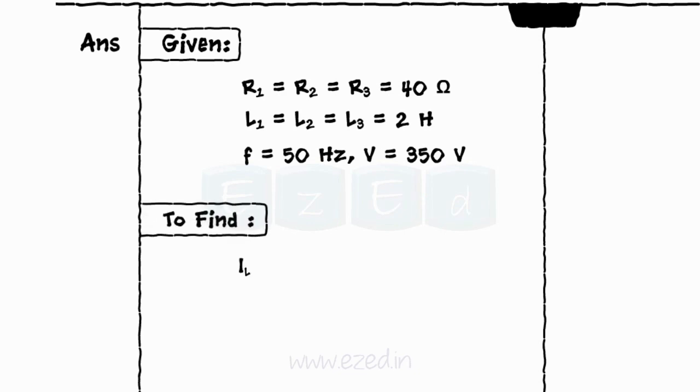We need to find the value of the line current and the total power absorbed by the circuit in both star as well as delta connections.